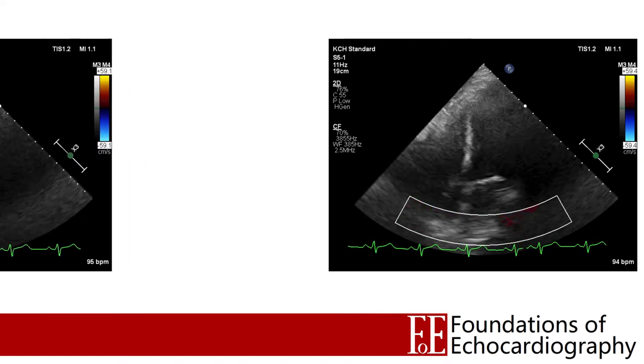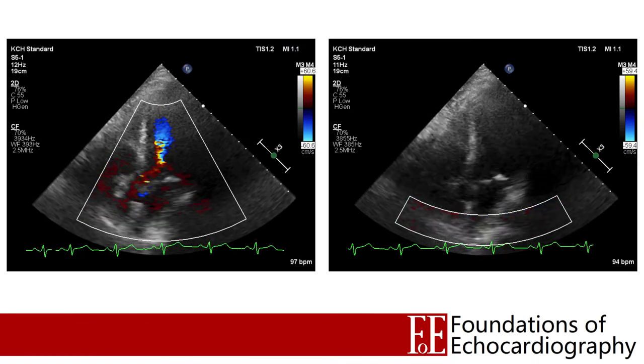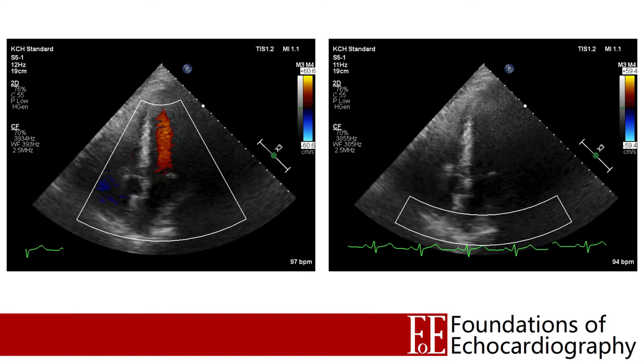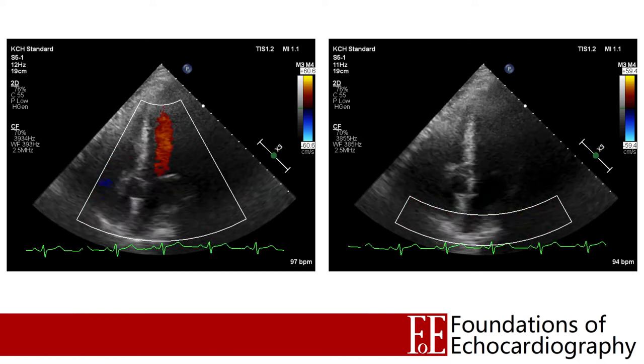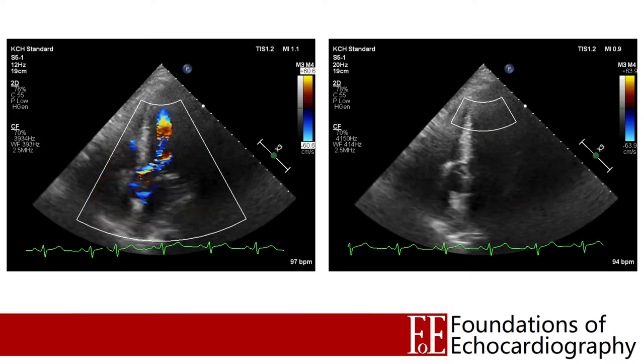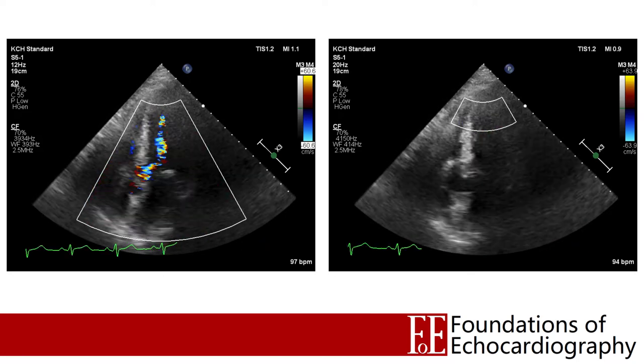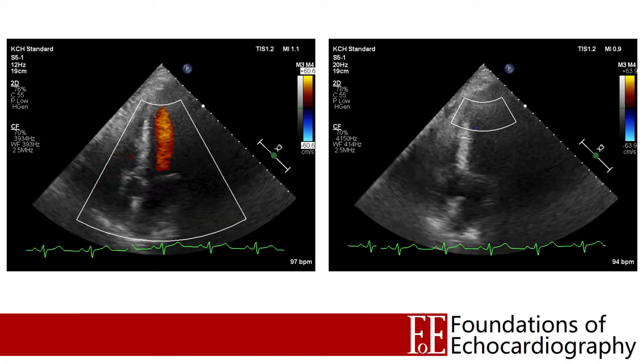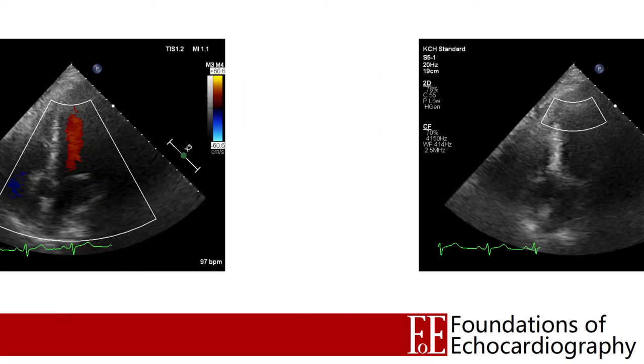What would happen to our frame rate if we used a colour box with a similar width to that on the right but displaying colour information from all that near-field area as well? The frame rate is essentially identical. But if we adjust our colour box to maintain the same width while only asking for information from the near field, the frame rate increases from 12 frames per second up to 20 frames per second. The guiding principle is the same as for generating a 2D image: keep your box as small as possible while still covering the entire region of interest.